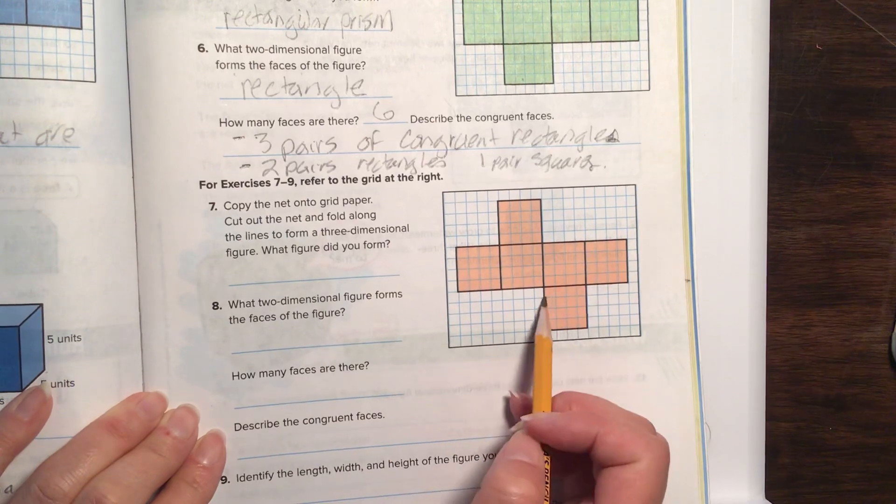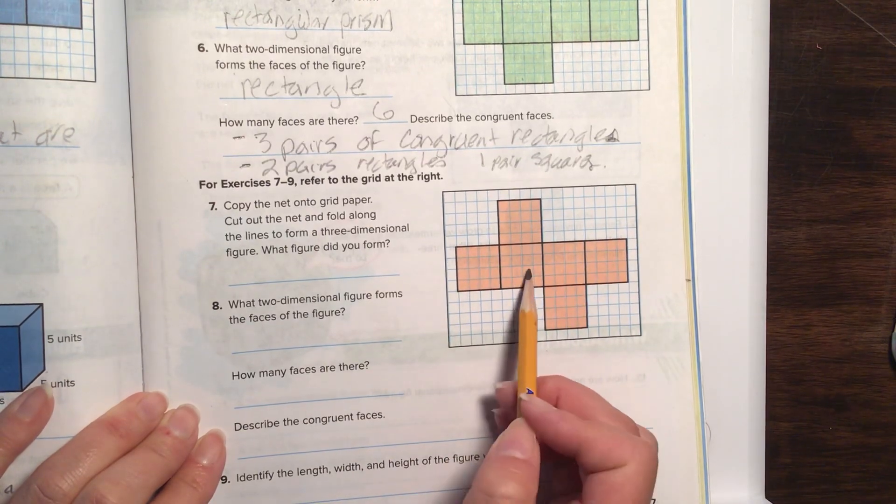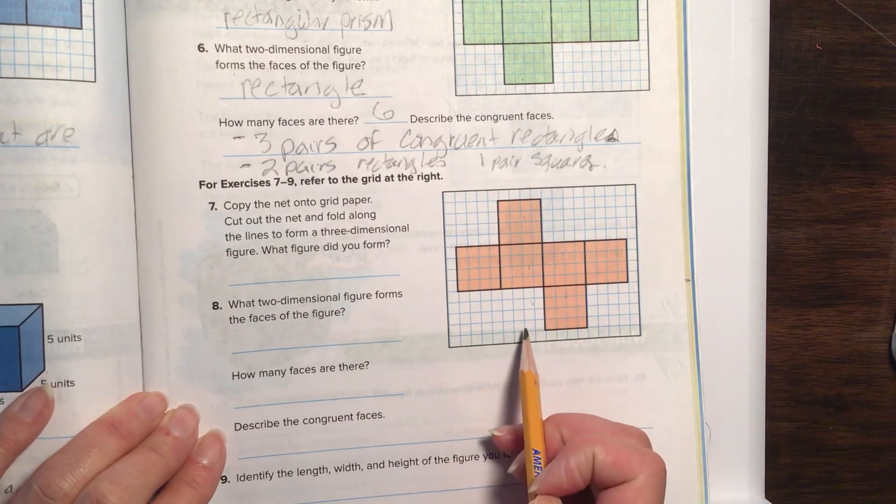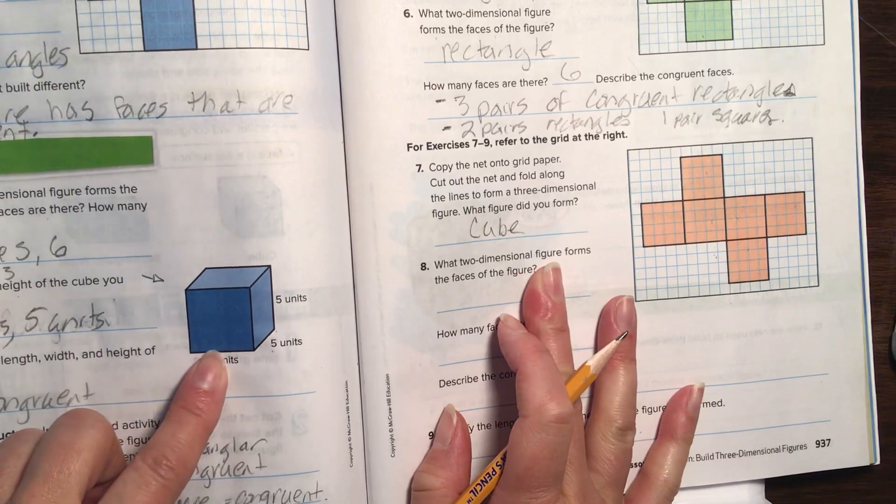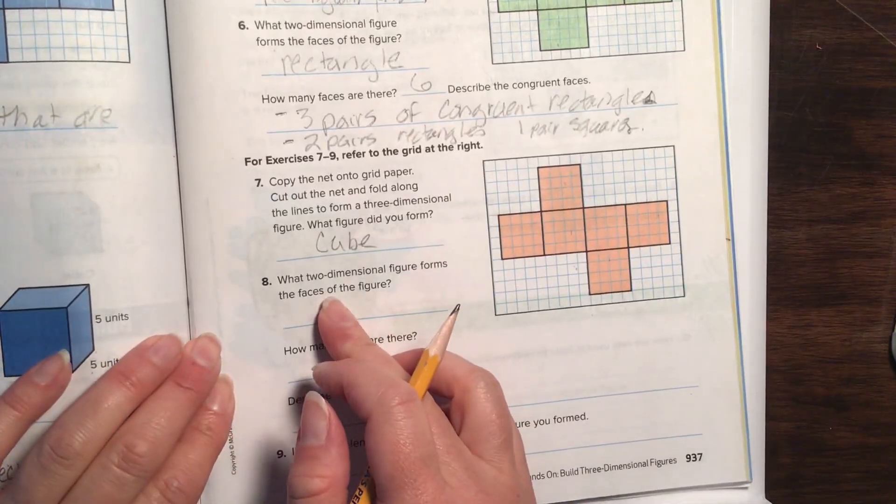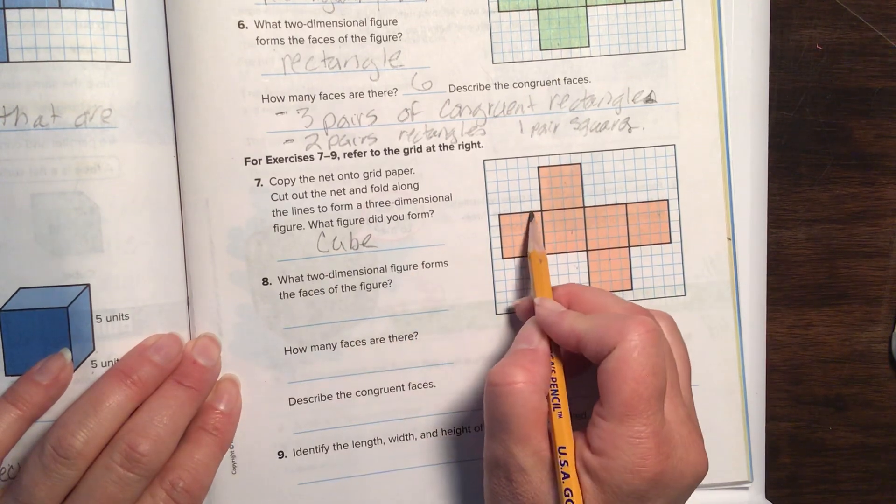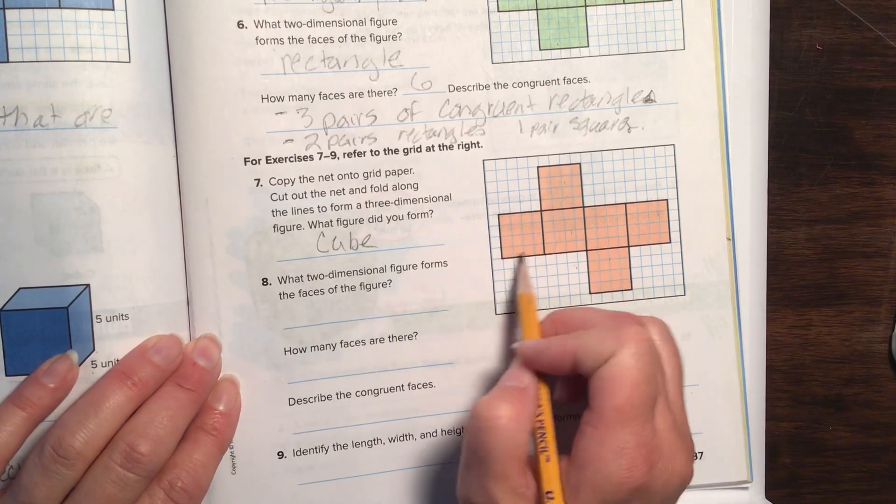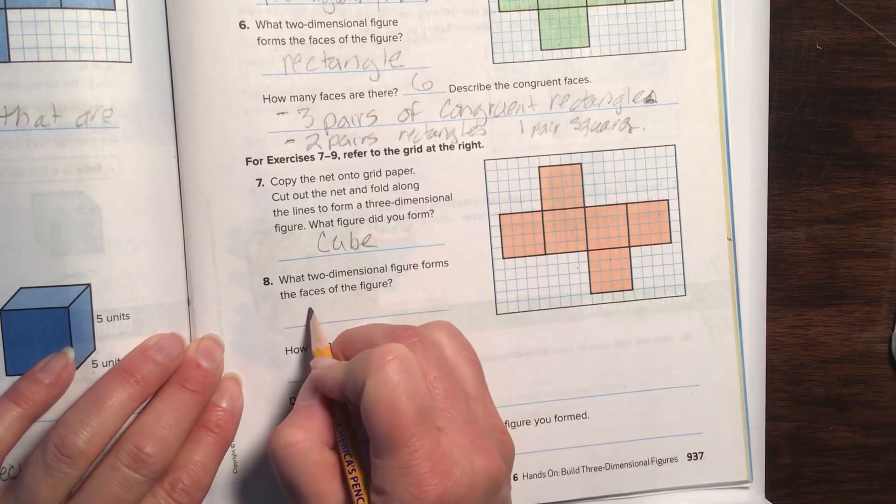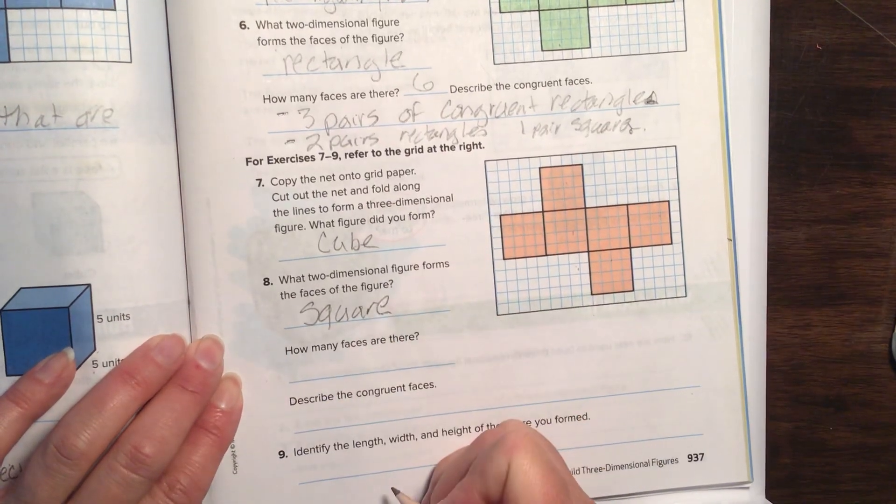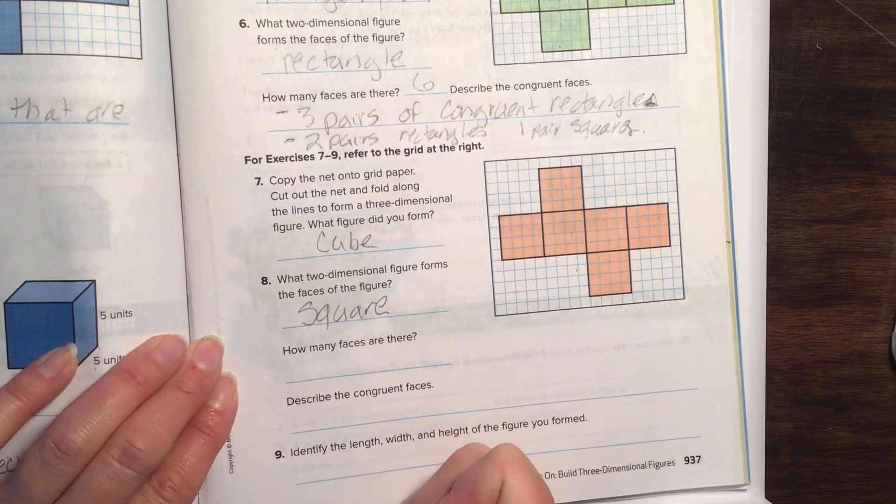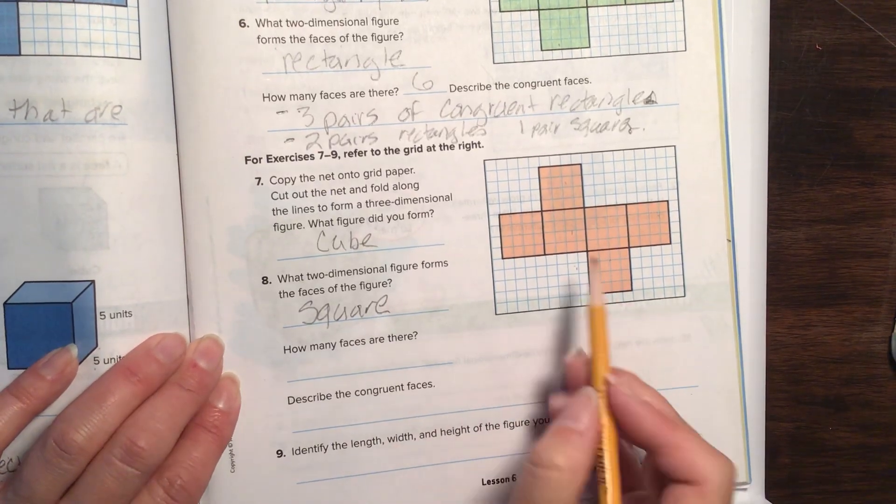All right, number seven. If we were to put all this together, what shape would that make? Well, I'm looking at all of these and they look like they're all squares. So, I think that will form a fun little box called a cube. It would look like that when it's all put together. Then, it's asking, what two-dimensional figure is the face? So, the very front of this, what shape is that? It's a square. Now, it wants us to count how many faces there are. It's kind of nice when it's laid out like this. It's a little bit easier.